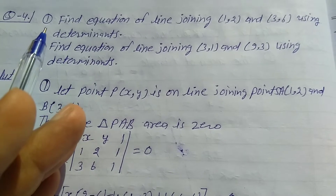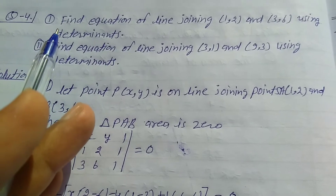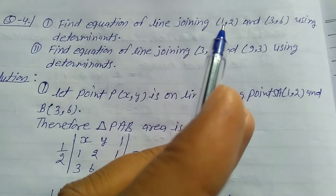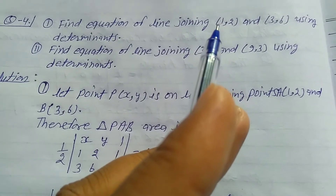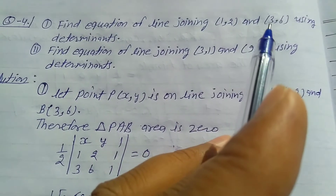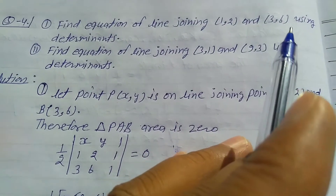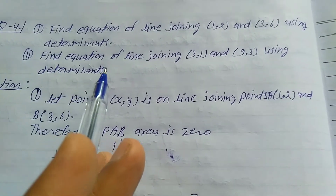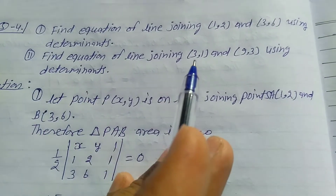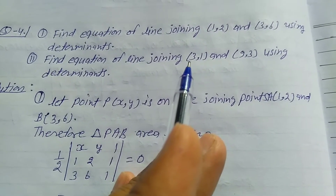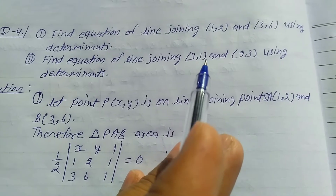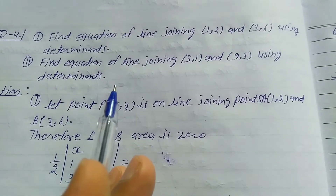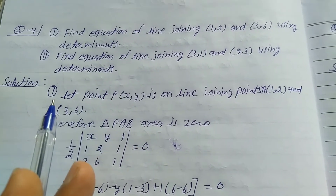Explain equation number for Exercise 4.3 class 12th. First: find the equation of a line joining (1,2) and (3,6) using determinants. Second: find the equation of a line joining (3,1) and (9,3) using determinants. Solution start.